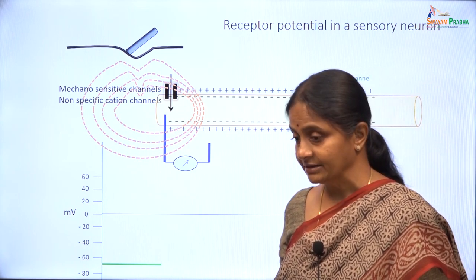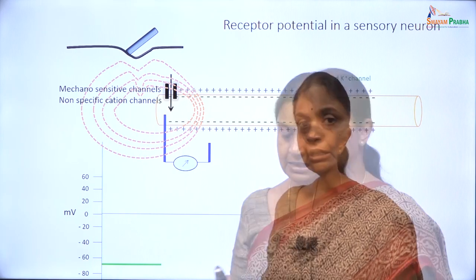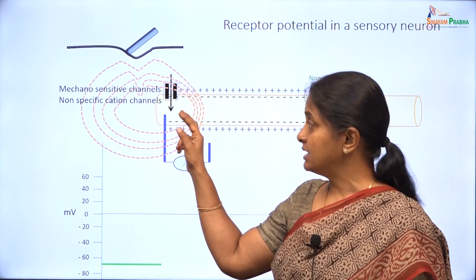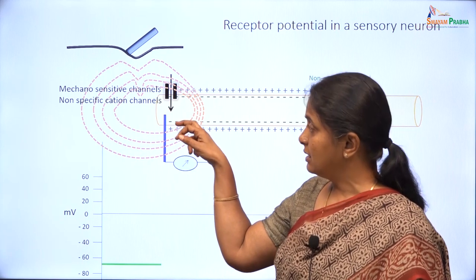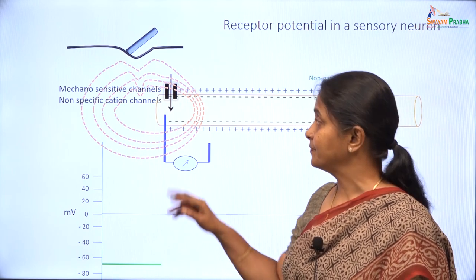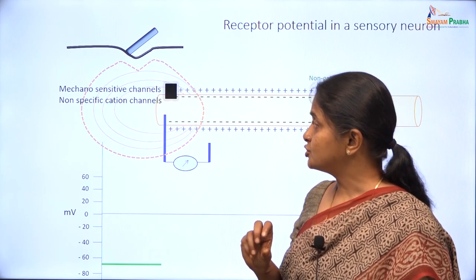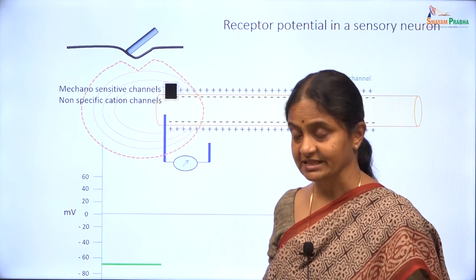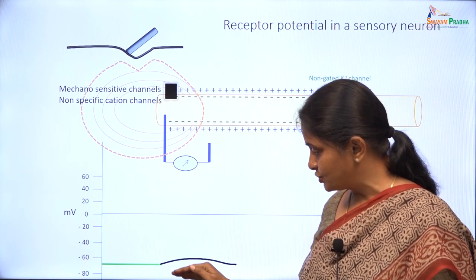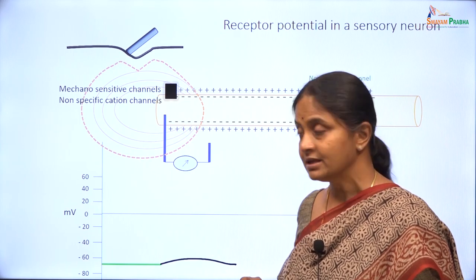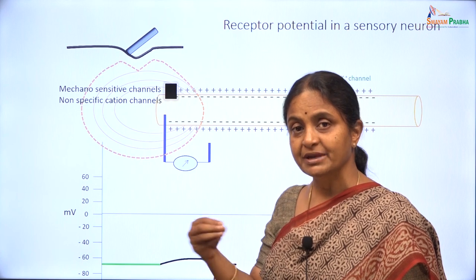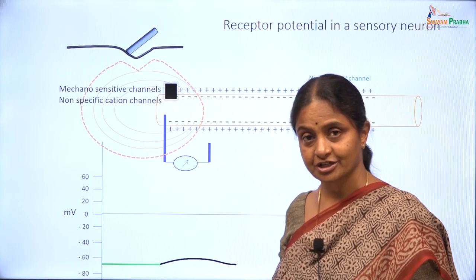These mechanosensitive channels are non-specific cation channels. Opening of the mechanosensitive channels will cause an inward current, and that will slightly depolarize the membrane — the inside will become less negative, a little less negative, though it will not approach positivity. These channels close soon after they open because the lamellae readjust themselves, and because they open and close for a brief period, they produce a very transient depolarization. That is why these types of channels — there are many of them in different sensory receptors — are called TRP channels, for transient receptor potential channels.